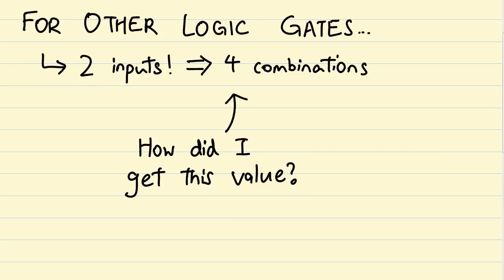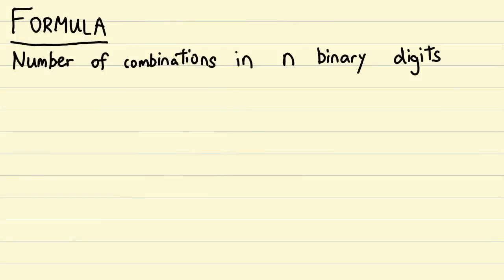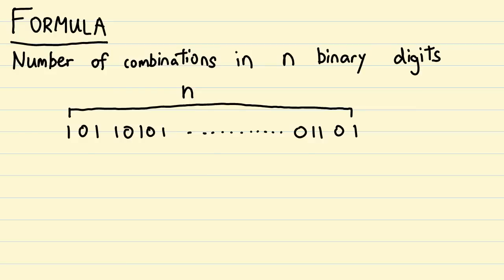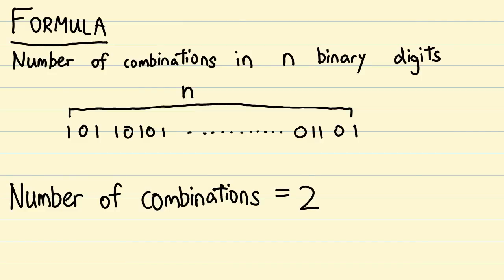How do we know this? Well, there's a very simple mathematical formula we can apply to find out. Let's say we have n number of binary digits. Remember that since these are binary, they can only be 0 or 1. To find out the number of combinations this number of binary digits can produce, we simply evaluate 2 to the power of n.